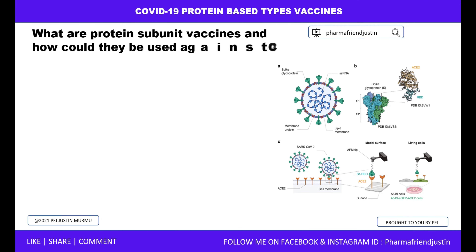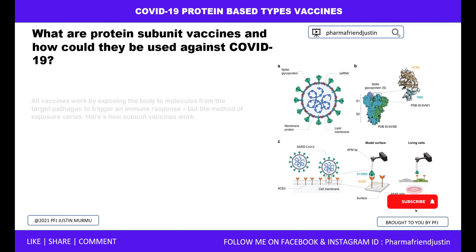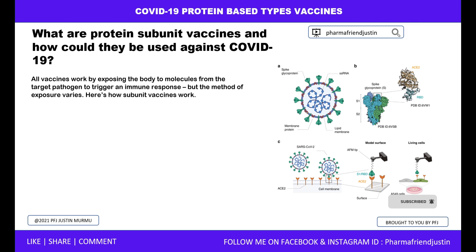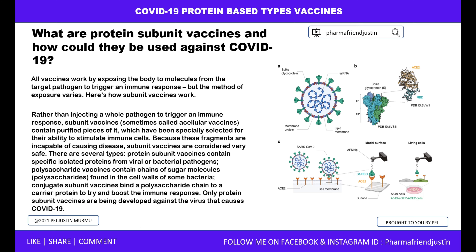What are the protein subunit vaccines and how could they be used against COVID-19? All vaccines work by exposing the body to molecules from the target pathogen to trigger an immune response, but the method of exposure varies. Rather than injecting a whole pathogen, subunit vaccines — sometimes called acellular vaccines — contain purified pieces of it, which have been specially selected for their ability to stimulate immune cells.